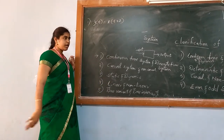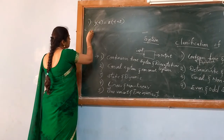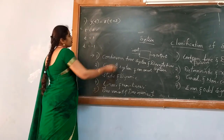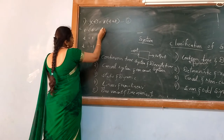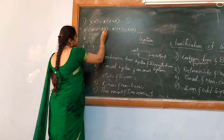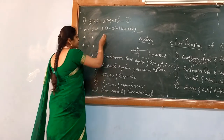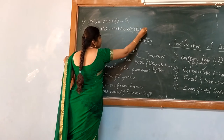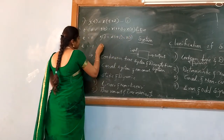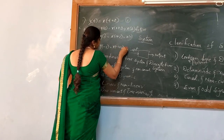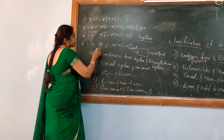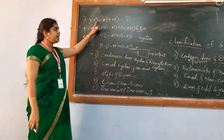I am taking a continuous time type of equation. Let me substitute three values: t equal to 0, t equal to 1, and t equal to minus 1. If I substitute t equal to 0, then y of 0 will be equal to x of 0 plus 2, which means x of 2. With respect to 0, the value 2 is a future value. When substituting t equal to 1: 1 plus 2 gives x of 3 — also a future value. For t equal to minus 1: x of minus 1 plus 2 gives x of plus 1. With respect to minus 1, plus 1 is in the future. Since it depends on future values, it is a non-causal system.